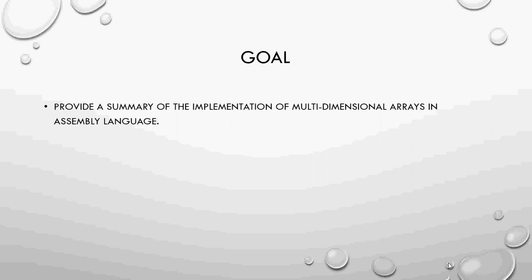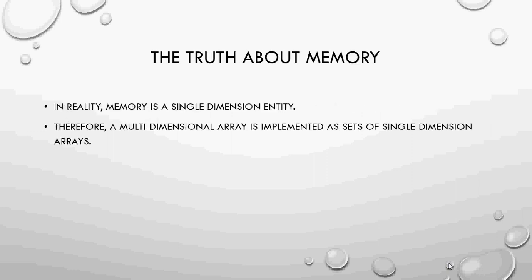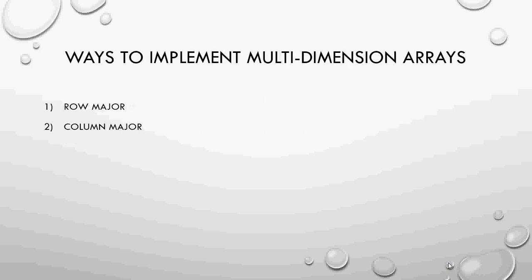My goal here is to give you a summary of the implementation of multi-dimensional arrays in assembly language. The truth about memory is that in reality memory is a single-dimension entity. What that means is that a multi-dimensional array is implemented as a set of single-dimension arrays. There are two ways to implement multi-dimensional arrays: one way is row major representation, and the other way is column major representation. Row major representation is the most widely used; column major was widely used in the old days — Fortran initially used column major representation.